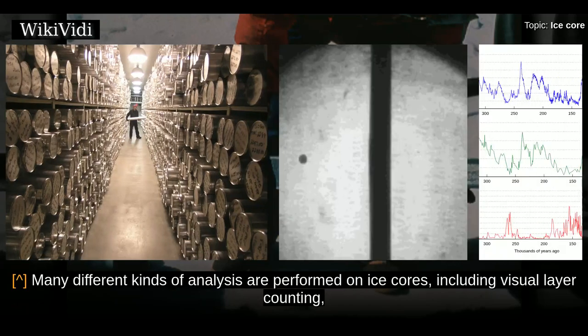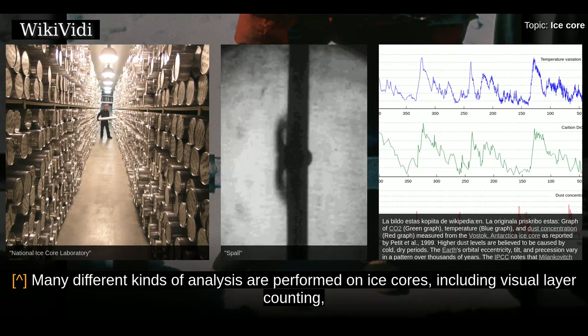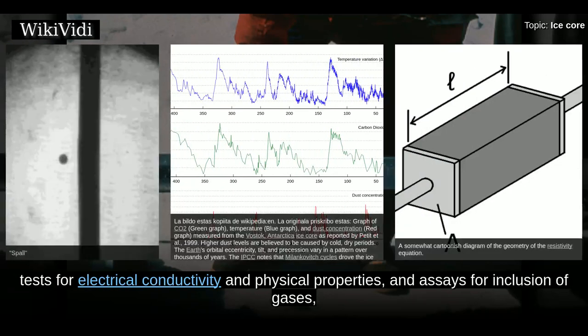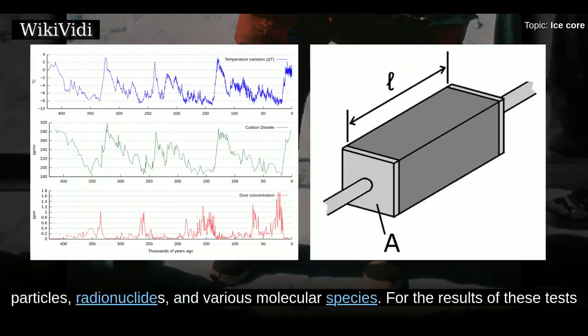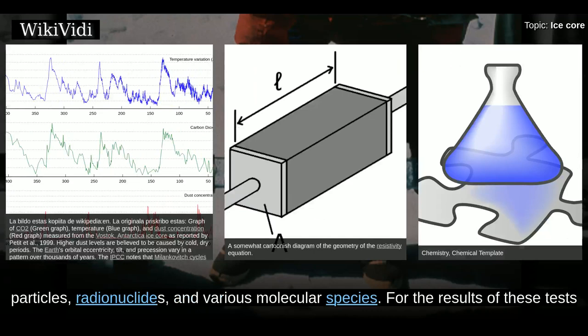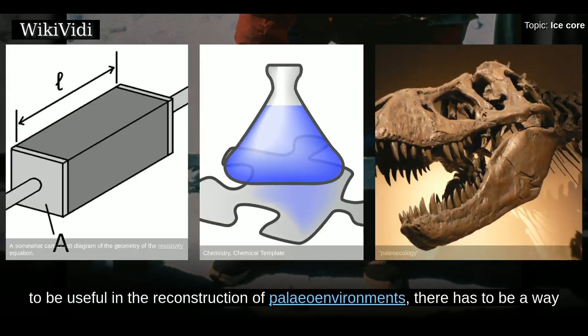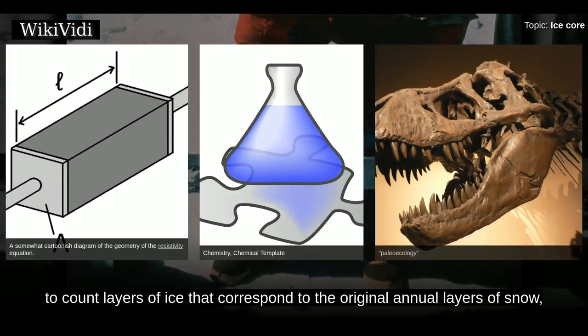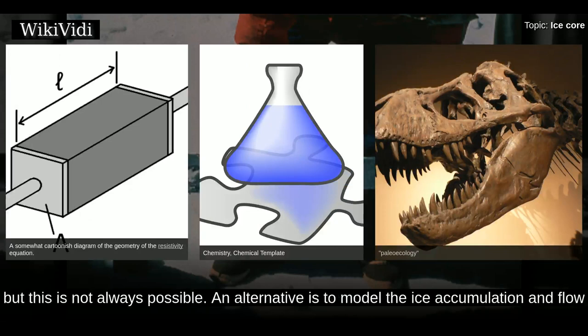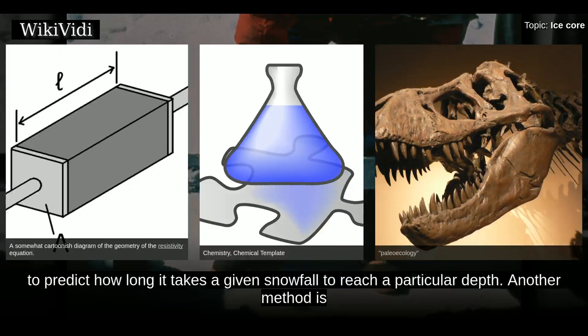Many different kinds of analysis are performed on ice cores, including visual layer counting, tests for electrical conductivity and physical properties, and assays for inclusion of gases, particles, radionuclides and various molecular species. For the results to be useful in the reconstruction of paleo-environments, there has to be a way to determine the relationship between depth and age of the ice. The simplest approach is to count layers of ice that correspond to the original annual layers of snow, though this is not always possible. An alternative is to model the ice accumulation and flow to predict how long it takes a given snowfall to reach a particular depth.